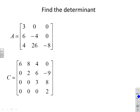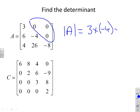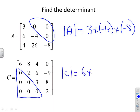So some examples. Find the determinant of the following matrices. Well, I can see that A is lower triangular. So by inspection, I just write A is the product of the diagonal elements. So it's 3 times minus 4 times minus 8. I'm not going to bother multiplying that out because it's a bit tedious. What about C? You can see that C is lower triangular. It's diagonal. It's got all zeros in the lower triangle. So therefore, I can see that the determinant of C is just going to be 6 times 2 times 3 times 2. That is the product of the diagonal elements.